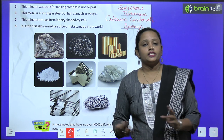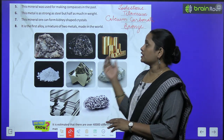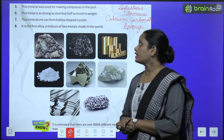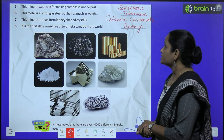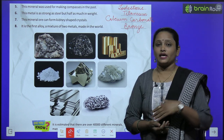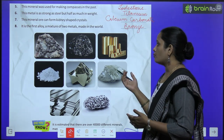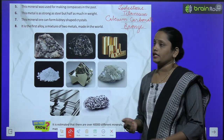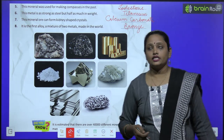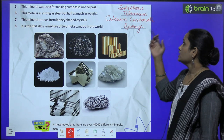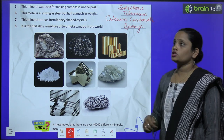Now children, let's move on to the fifth one. This metal was used for making compasses in the past. Pahle jaise is metal ko use kiya ta ka compass banane ke liye. And this metal is lodestone.